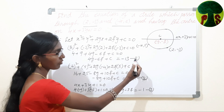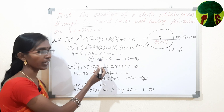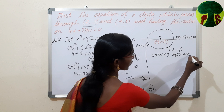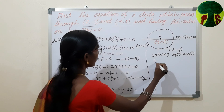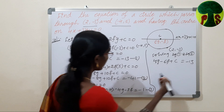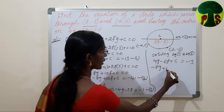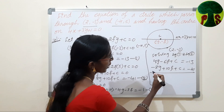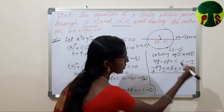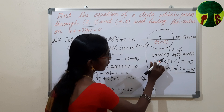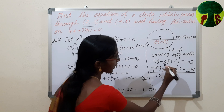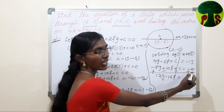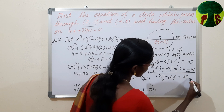Solving equations 1 and 2 by subtracting: 4g minus 6f plus c minus (minus 8g plus 10f plus c) equals minus 13 minus (minus 41). The c terms cancel. We get 12g minus 16f equals 28. Call this equation 4.